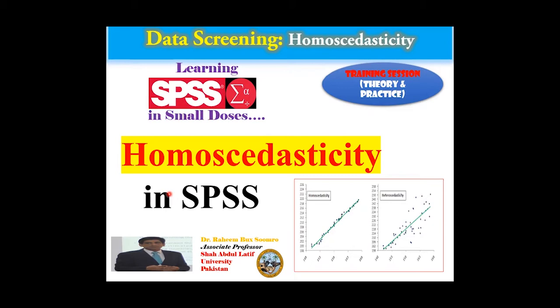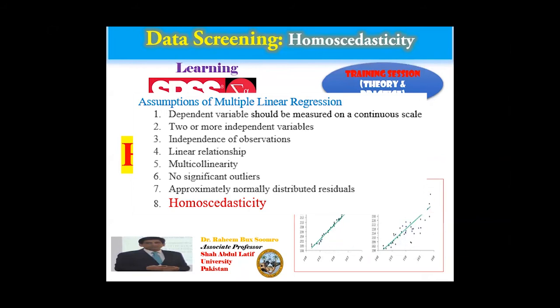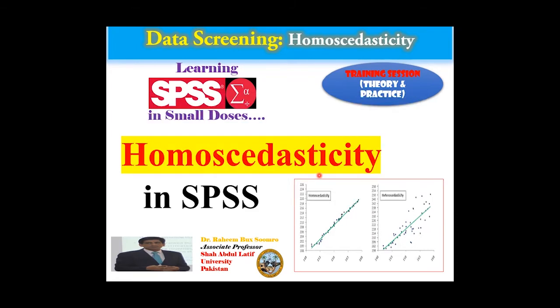Whenever you want to apply ordinary least squares multiple regression on your data, certain assumptions must be met. There are six assumptions in total, and it is very important to meet all of them. Even if you are not meeting these assumptions, the software will still provide results, but those results would be invalid.